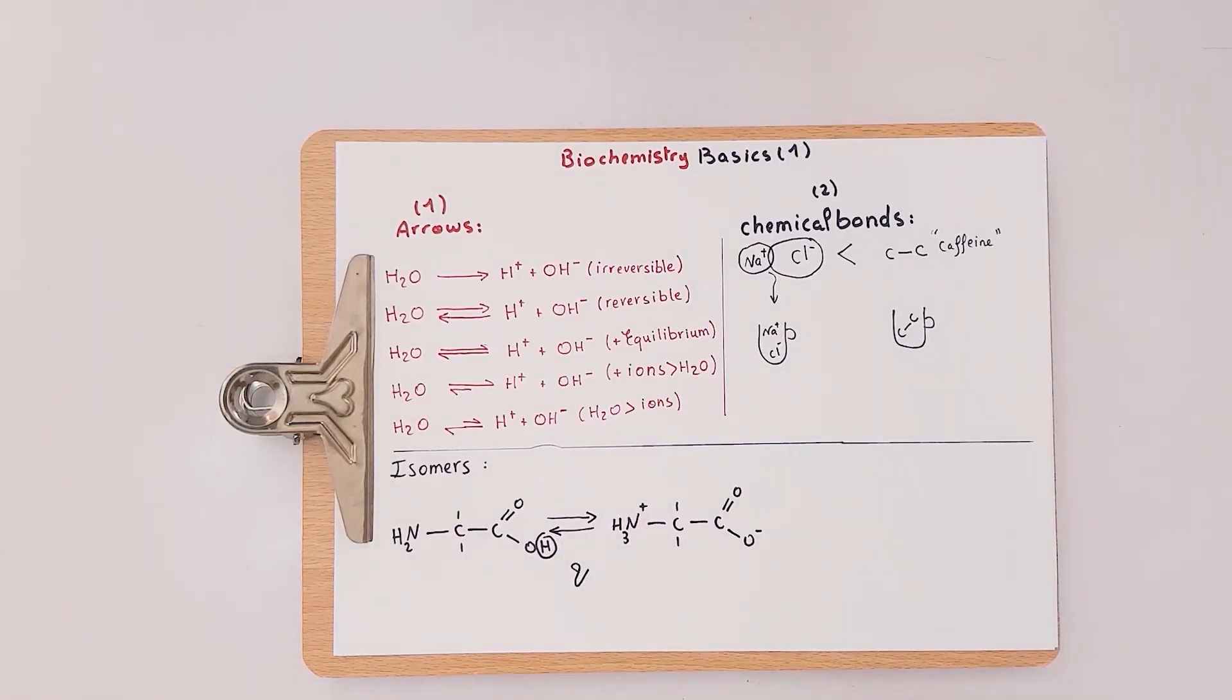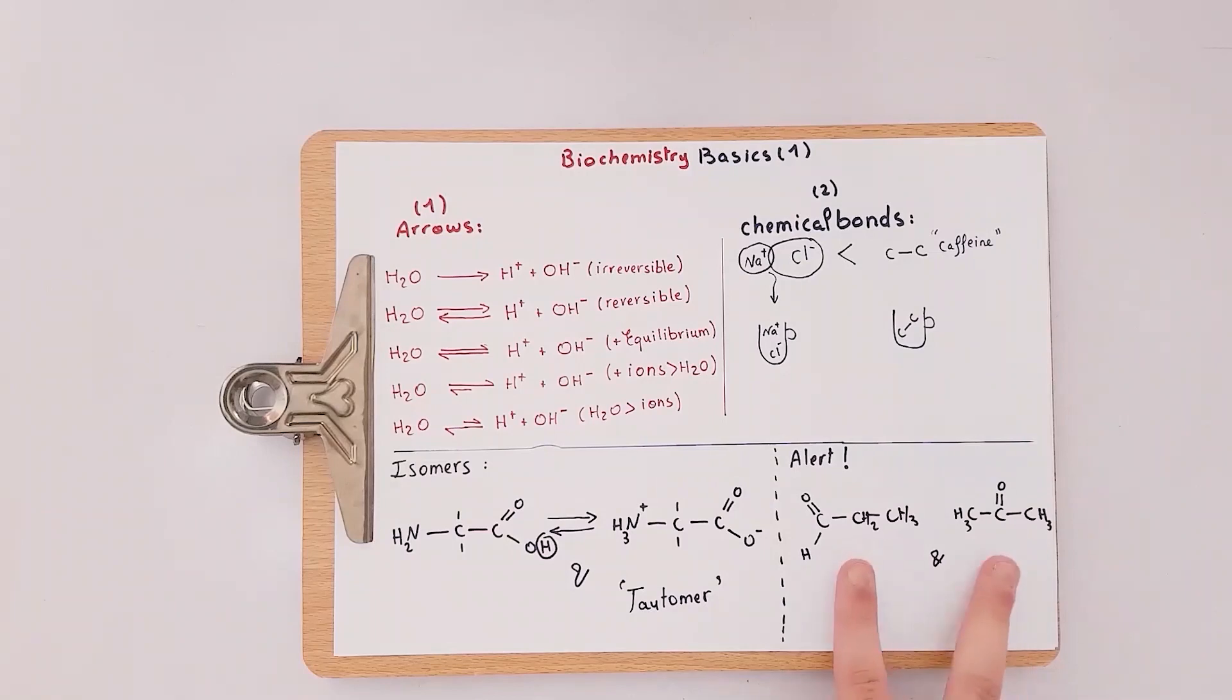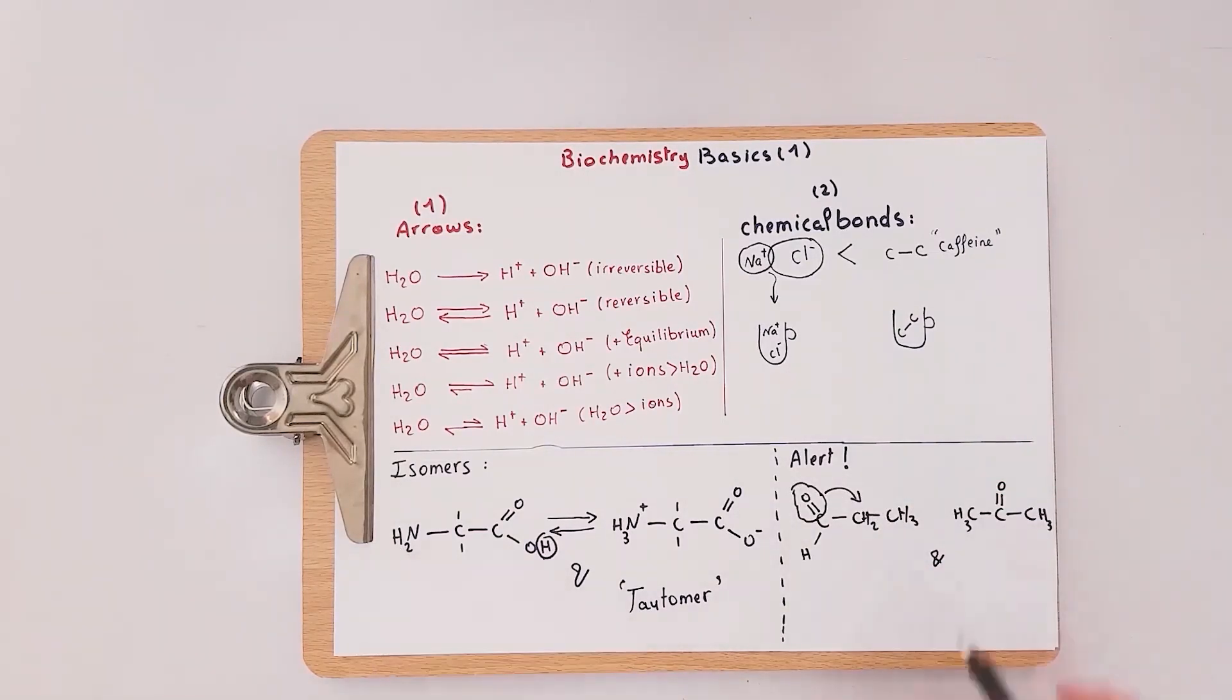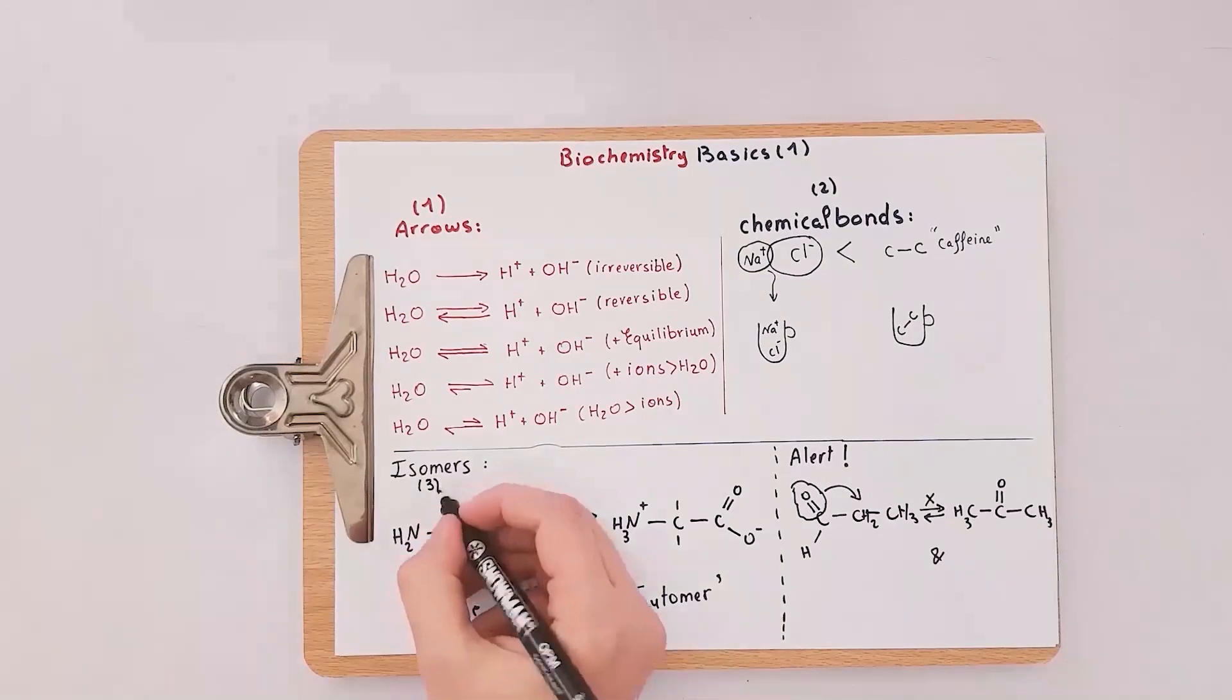But in this case where the proton can be transferred in a reversible process, they became tautomers. A big warning sign: not all isomers can become tautomers. As the following example, the C double bond O cannot be broken to transfer the oxygen from place to the other. The only thing that is able to be transferred is the proton only.